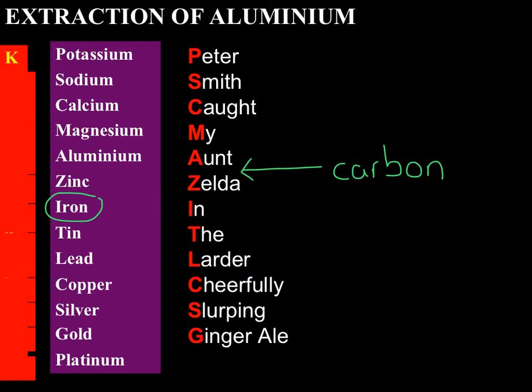If we look at the metal we want to consider this lesson — aluminium — you'll see that aluminium is above carbon in the reactivity series, so therefore carbon is not reactive enough to extract aluminium from its ore. Therefore aluminium has to be extracted by a different process: it has to be extracted by electrolysis.